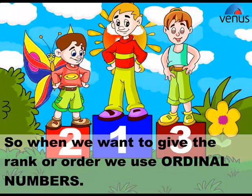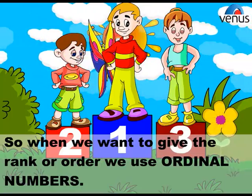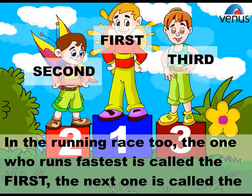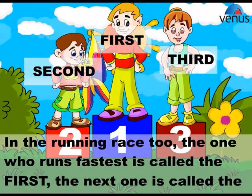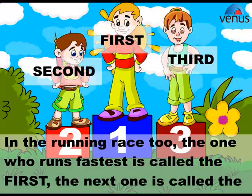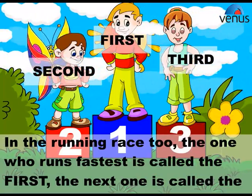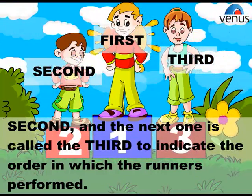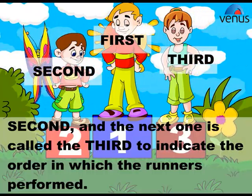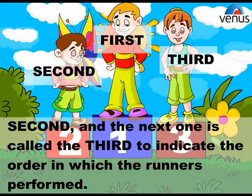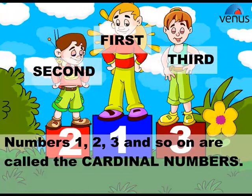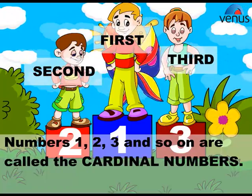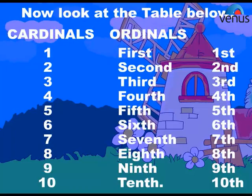So when we want to give the rank or order, we use ordinal numbers. In a running race, the one who runs fastest is called the first, the next one is called the second, and the next one is called the third. To indicate the order, numbers one, two, three and so on are called the cardinal numbers.